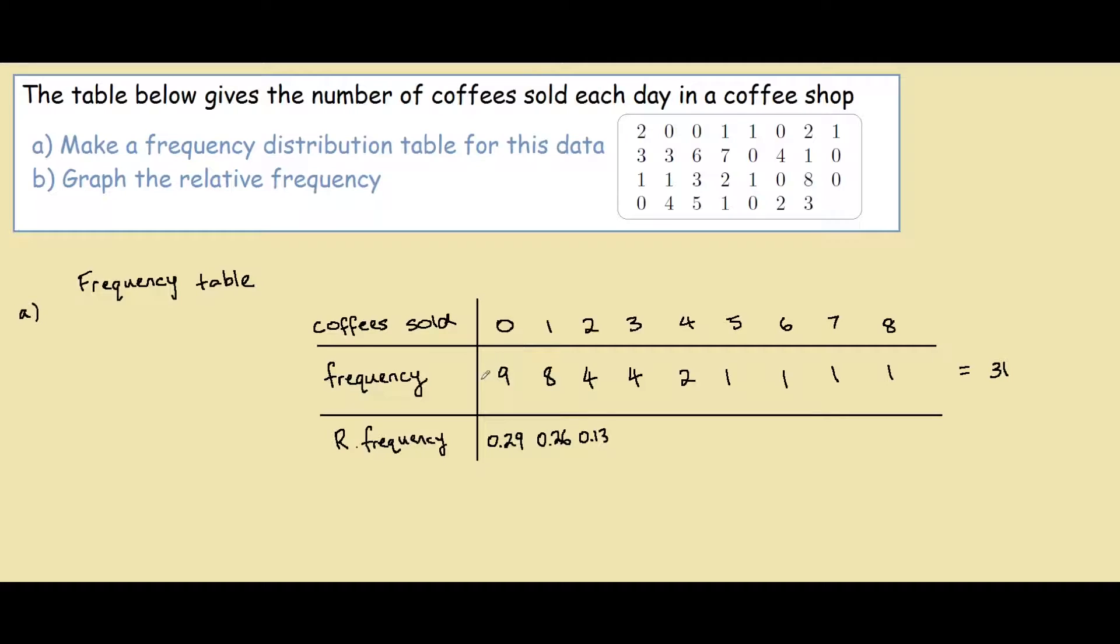So in this case we can say that 0 coffees were sold with a frequency of 29% compared to the rest of the data set. So if we continue this is also 0.13. 2 divided by 31 is 0.06. And 1 divided by 31 is 0.03. A good way to make sure that you didn't make any mistakes when calculating the relative frequency is that when you add them all up it should equal 1.